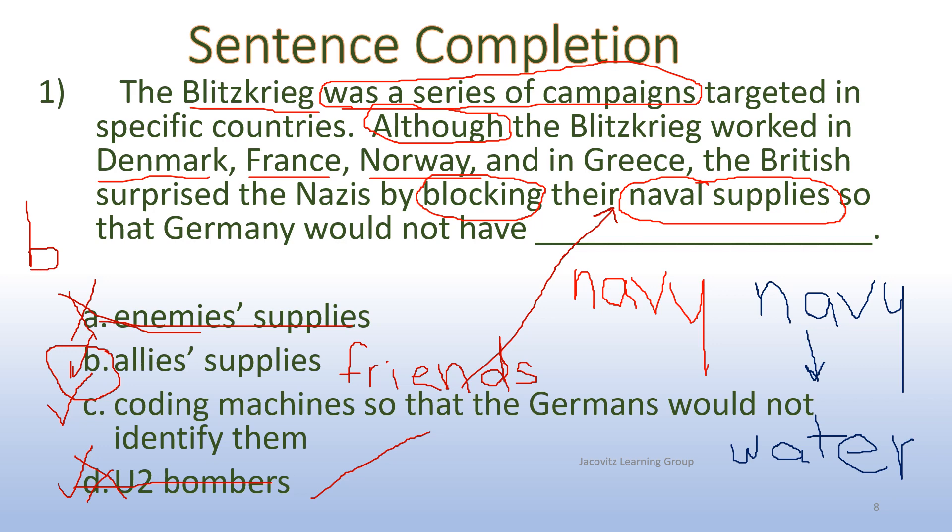So when you're reading these, look for clues. Look for what's already been given to you, specific countries. And look at blocking naval. Those are your two big main words here. And once you get into blocking naval supplies, it's on the water. So you're looking for something, and it has to do with supplies.